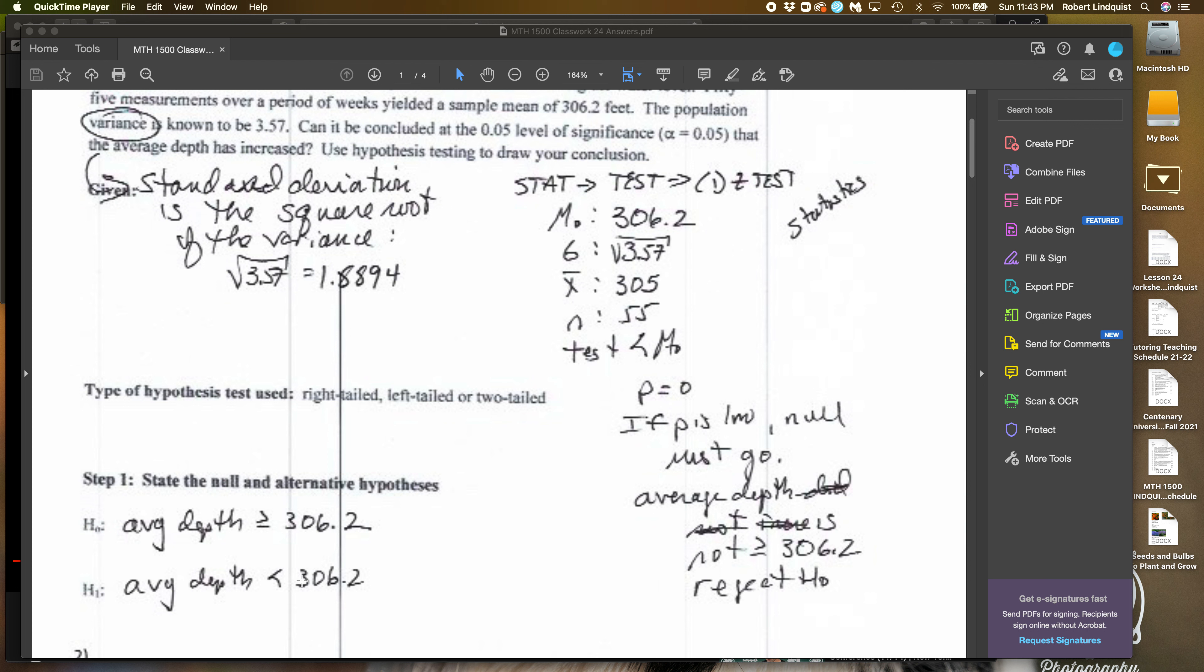Once I get to the Z test mode, and I want to make sure in this particular problem, I'm using statistics. In the next problem, I'll show you data. But in this problem, it's statistics. So across the top there, it says data or statistics. Make sure you're in statistics is the mode you choose.